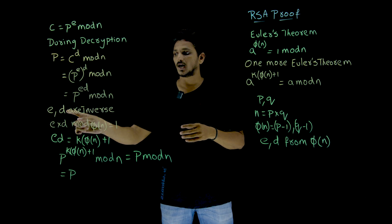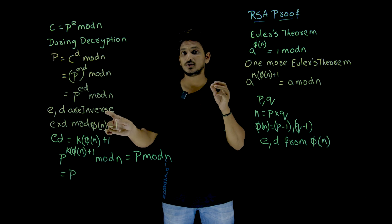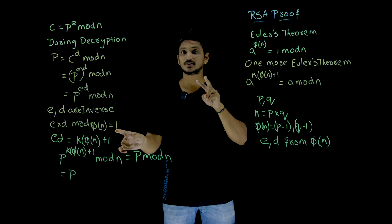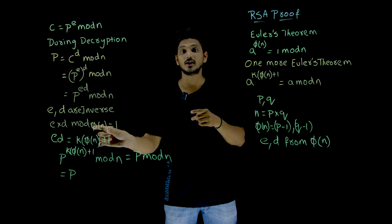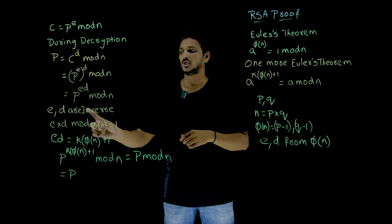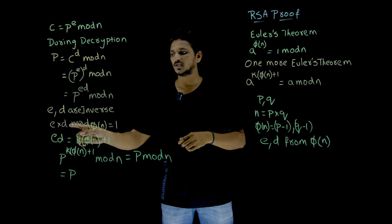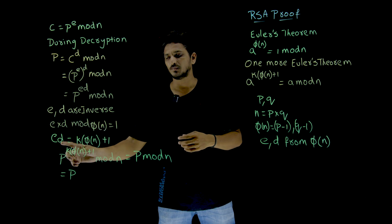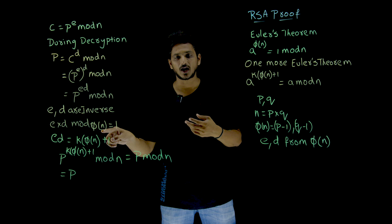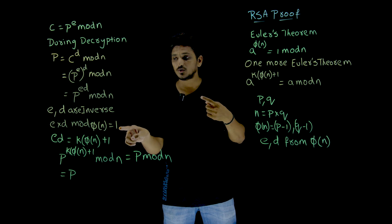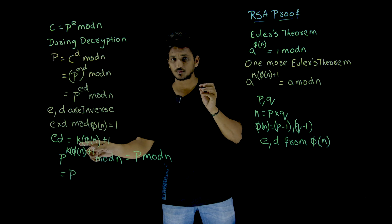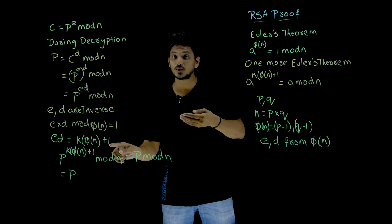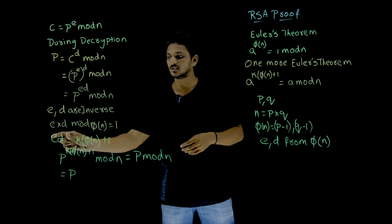When e and d are inverses of each other, it means e multiplied by d, mod phi of n, equals 1 — that is what makes them inverses, since e and d are selected from the set of phi of n. Since e·d mod phi(n) = 1, we can write e·d as k times phi of n plus 1, where k is some constant integer, because e·d is divisible by phi of n with a remainder of 1.